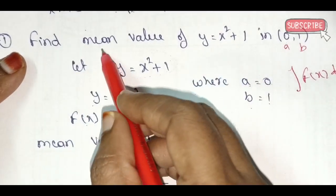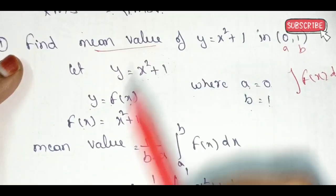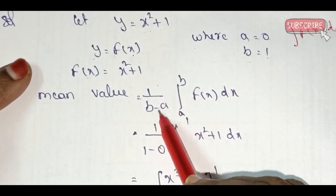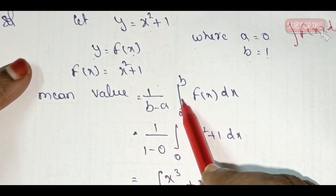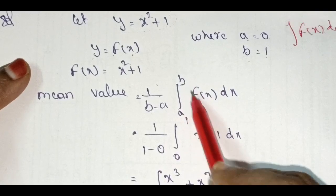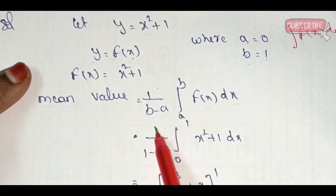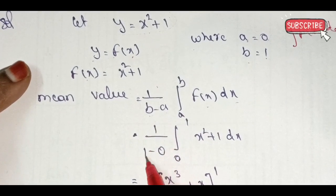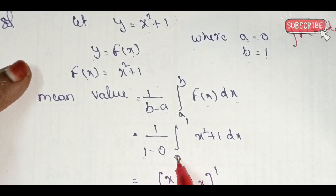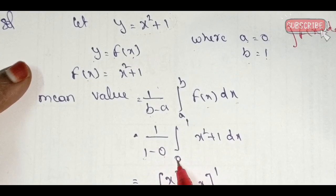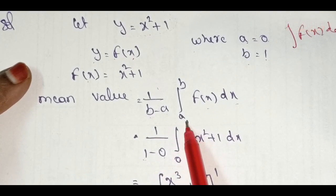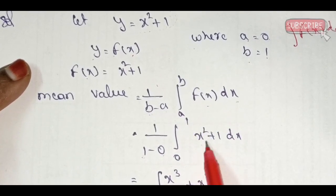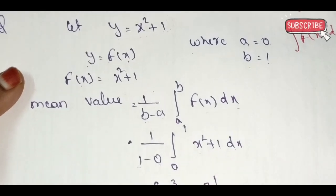We will find out the mean value. The formula is 1 by (b minus a), integral from a to b of f(x) dx. So 1 by (1 minus 0), integral from 0 to 1 of (x² + 1) dx.